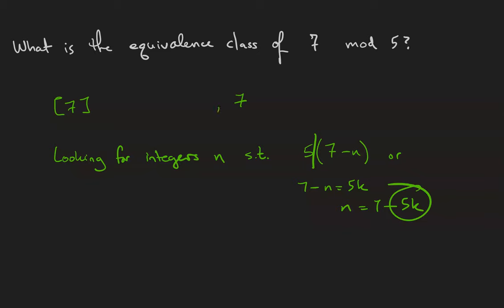So all of the integers that we're looking for are going to be a multiple of 5 away from 7. That includes the integer 2, the integer negative 3, the integer negative 8, etc. And going in the other direction, we have the integer 12, the integer 17, and so on.